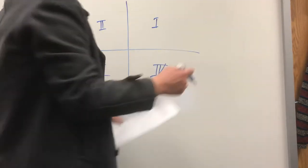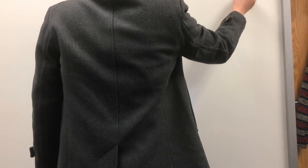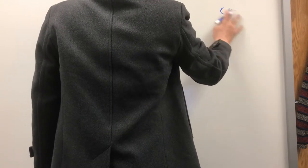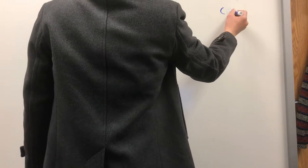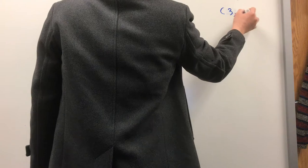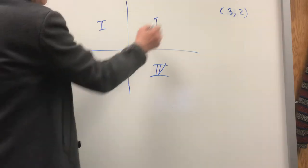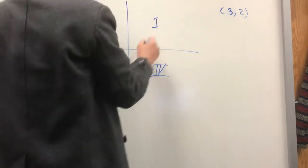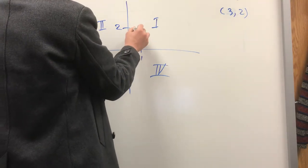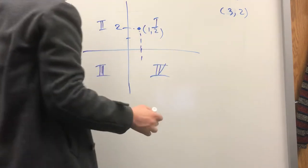If I ask you to plot the point (1, 2), one is the x-coordinate so we go to 1 on the x-axis, and 2 on the y-axis. So that point is here — in quadrant 1.